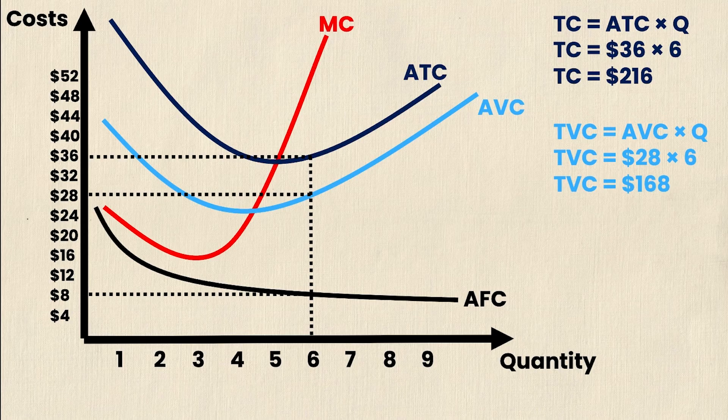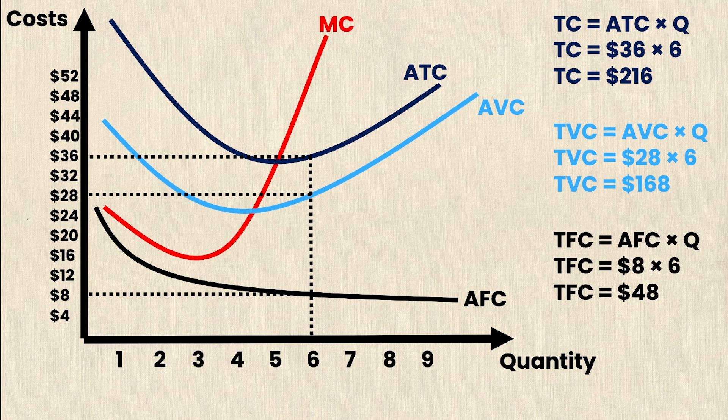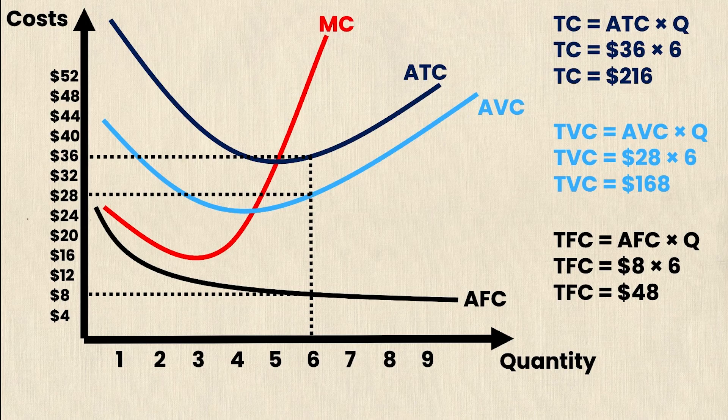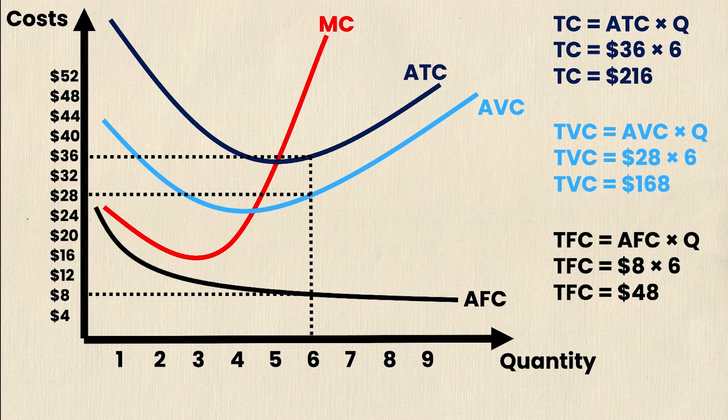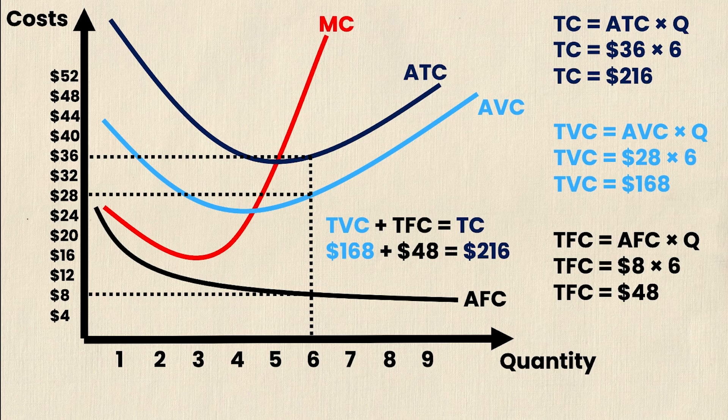Finally, we apply these same principles to the average fixed cost to calculate the total fixed cost. Total fixed cost is equal to the AFC times Q. So the average fixed cost at a quantity of six is $8. $8 times six is equal to $48. Now to make sure that we've not messed up any of our algebra, we can actually cross check this and make sure that the TVC plus the TFC equals the total cost. And so checking that math, we discovered that 168 plus 48 is in fact 216. And therefore, we haven't made any errors in our math.